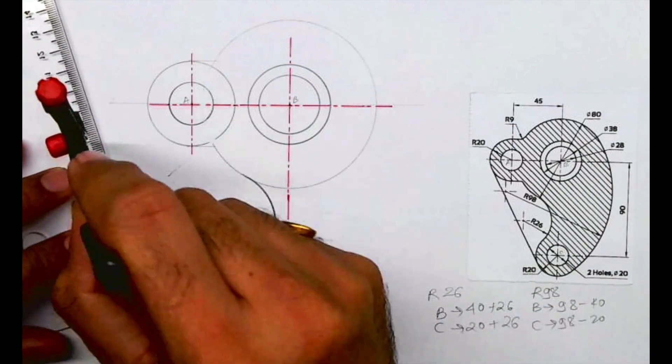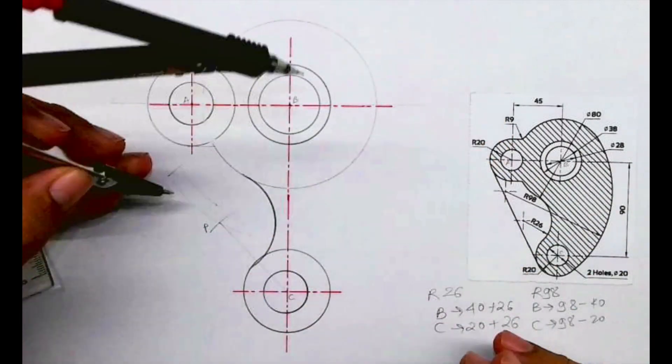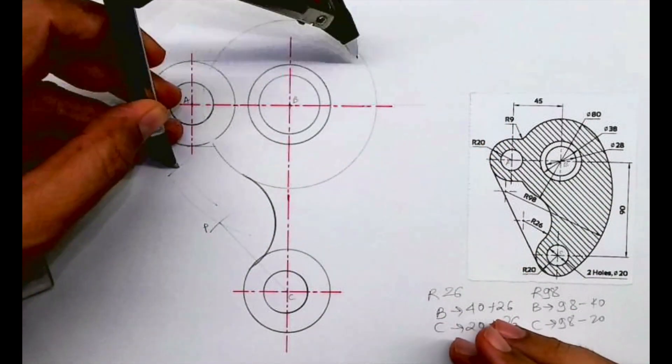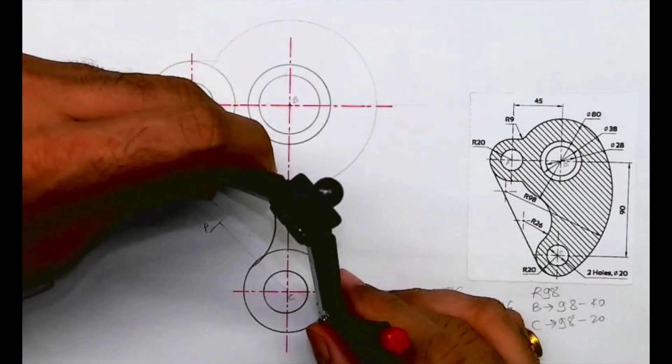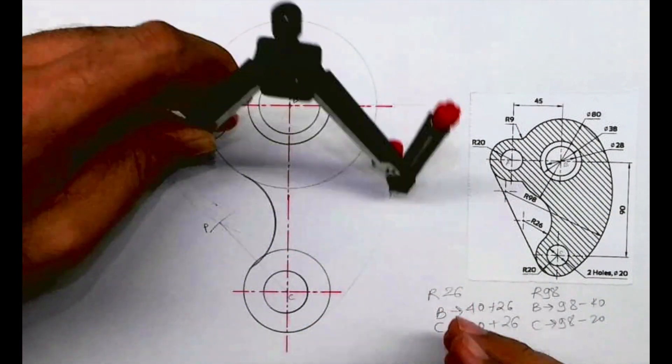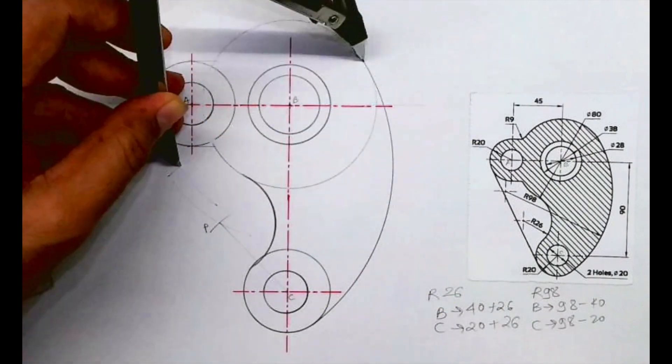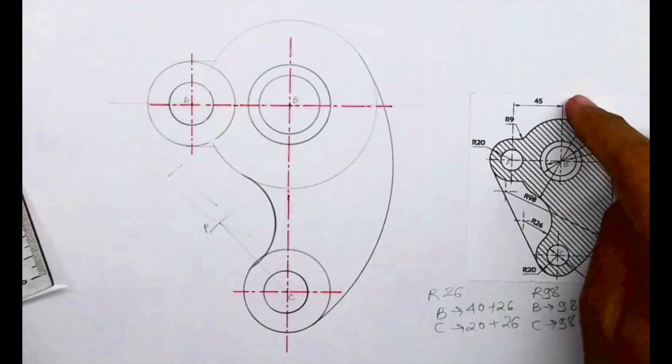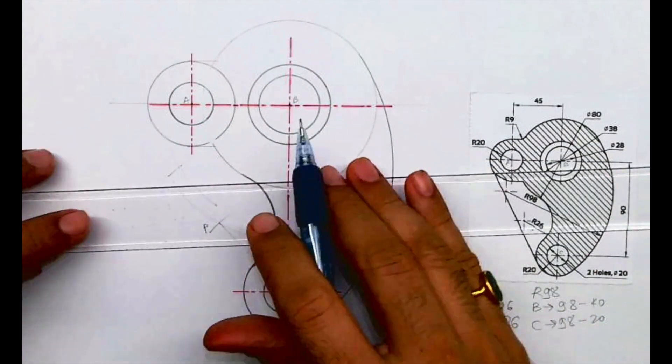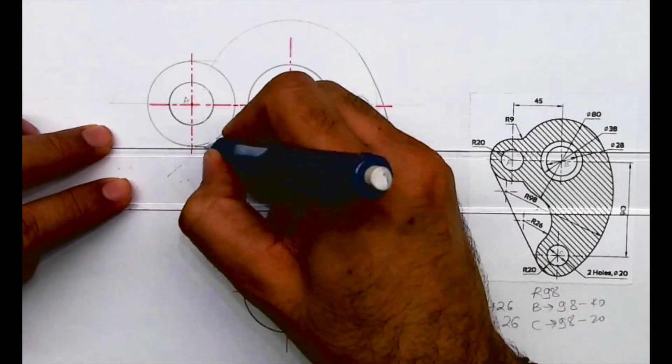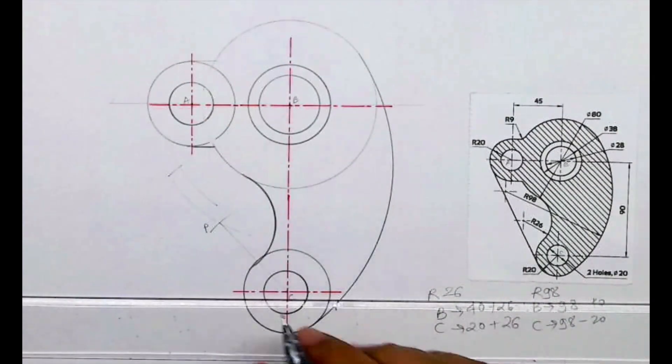And from that point we cut radius 98. So from B you cut radius 98, we can draw direct. Now here also we have to draw radius 9.